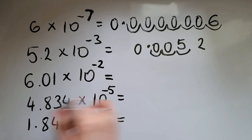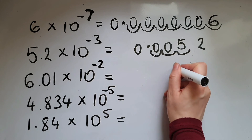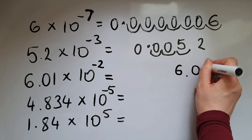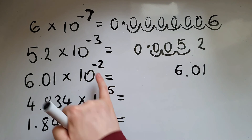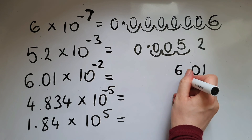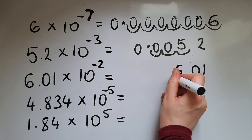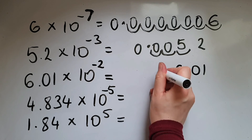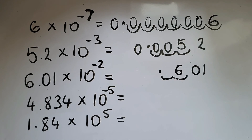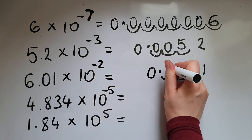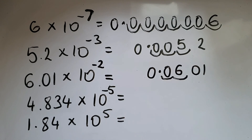Here we've got 6.01 times 10 to the power of negative 2, so we're moving two places to the left: 1, 2. That's where we put the decimal point — zero in front, filling the gaps with zeros.